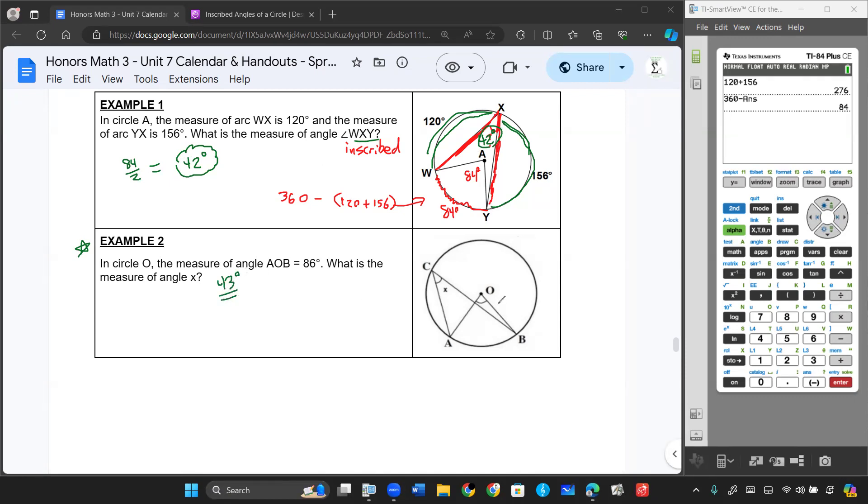If you didn't get 43, follow along, and we can watch how to do it. So in this problem here in circle O, angle AOB is going to be 86 degrees. Now, if you notice where that O is, that's in the center of the circle. So that 86 degrees by default will also be the arc degree measured here.